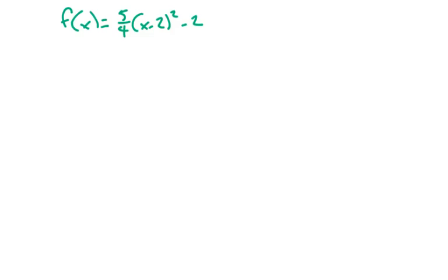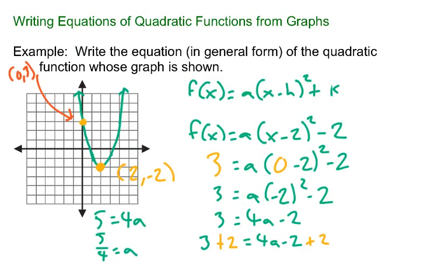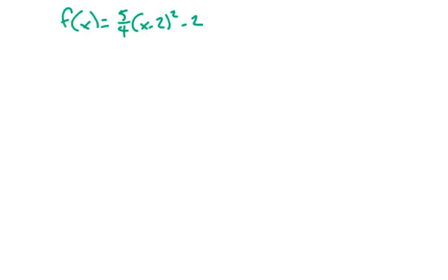Now, the only thing we have to do still is if we look back a page, the question is asking us to write the equation in general form. General form for a quadratic function looks like this: f(x) equals ax squared plus bx plus c. So to get this into this formula, we're going to have to do a little bit of algebra. Mainly, we're going to have to square the (x minus 2).